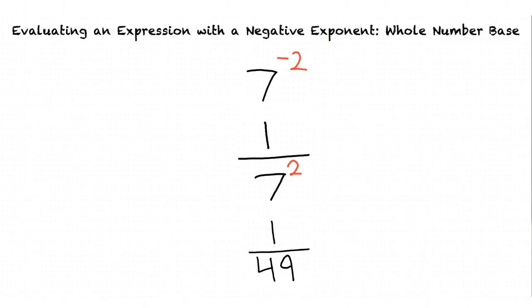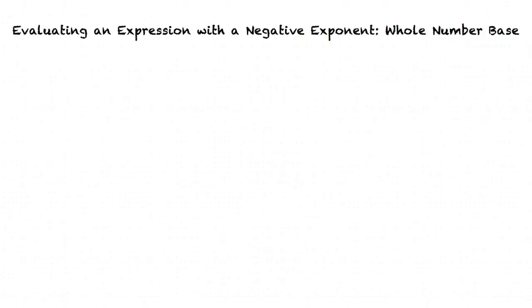Now that we have done an example, would you like to try and solve a problem with the base and exponent being in the denominator? Sure, I think I'm ready. Great, your problem is 1 over 3 to the power of negative 3.